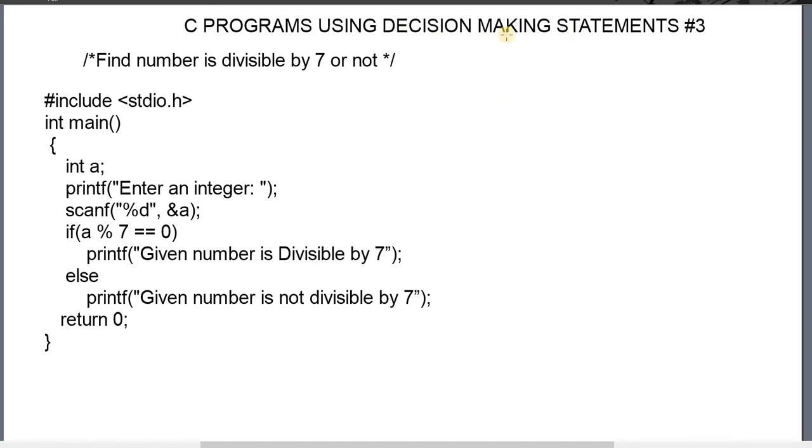This is the third program in C decision making statements. Let me explain the code to find if a number is divisible by 7 or not.